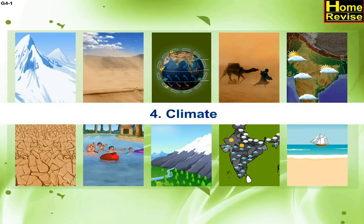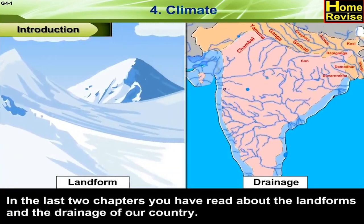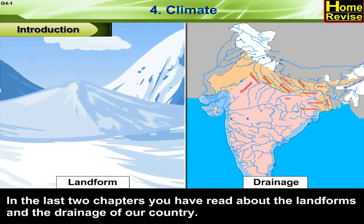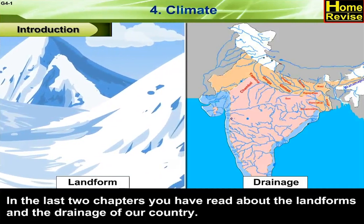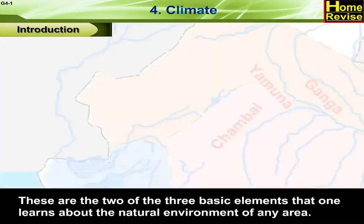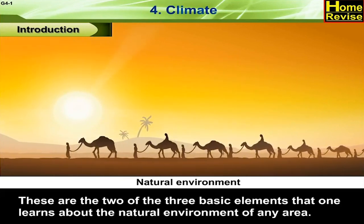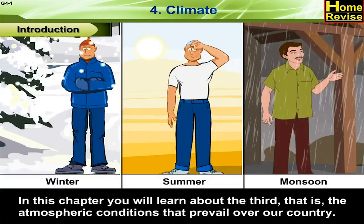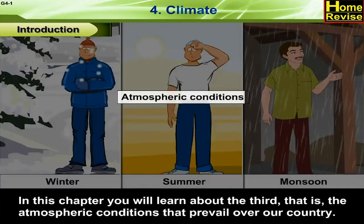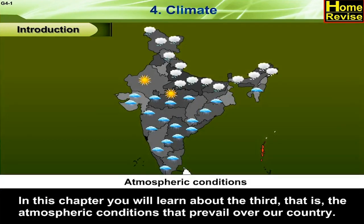Chapter 4. In the last two chapters, you have read about the landforms and the drainage of our country. These are two of the three basic elements that one learns about the natural environment of any area. In this chapter, you will learn about the third — that is, the atmospheric conditions that prevail over our country.